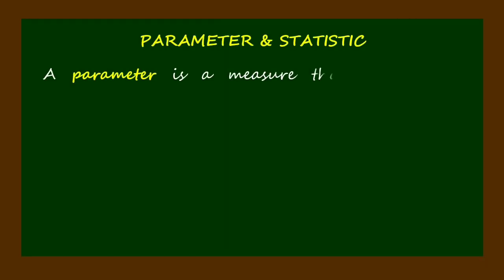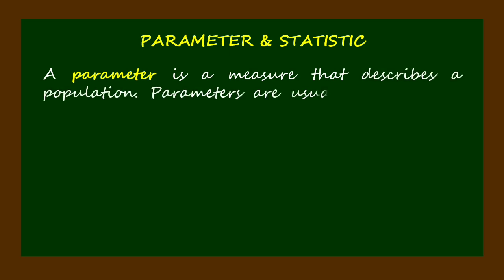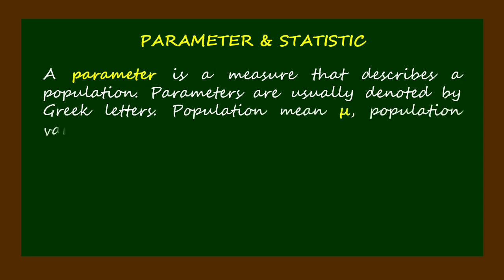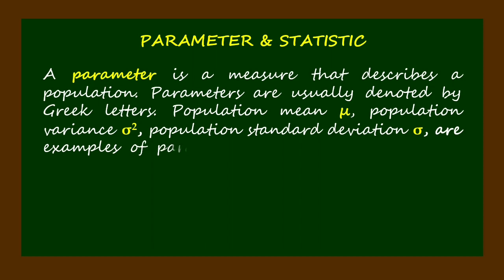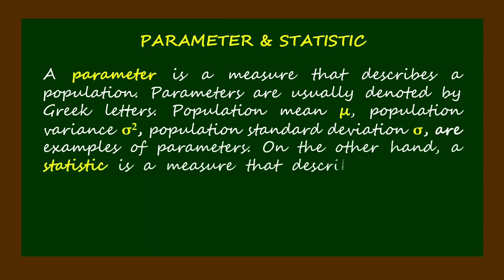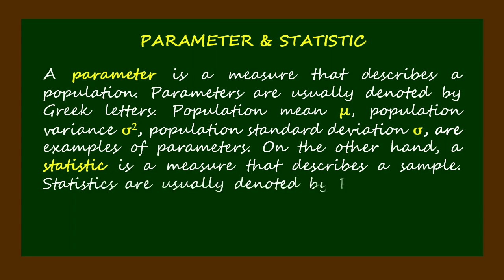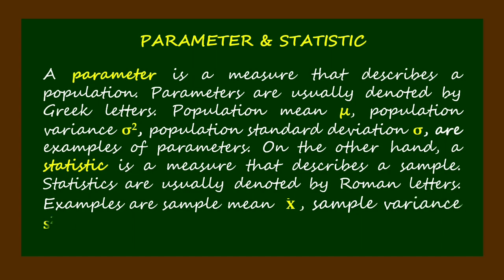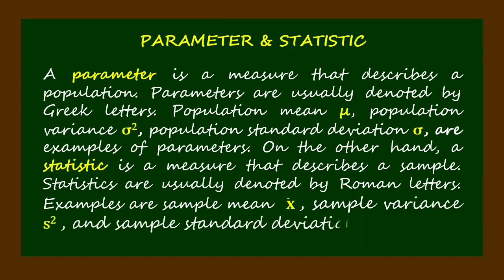A parameter is a measure that describes a population. Parameters are usually denoted by Greek letters — population mean mu, population variance sigma squared, and population standard deviation sigma are examples of parameters. On the other hand, a statistic is a measure that describes a sample. Statistics are usually denoted by Roman letters. Examples are sample mean bar x, sample variance s squared, and sample standard deviation s.